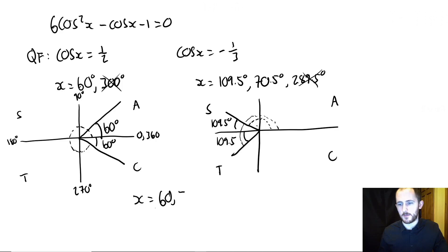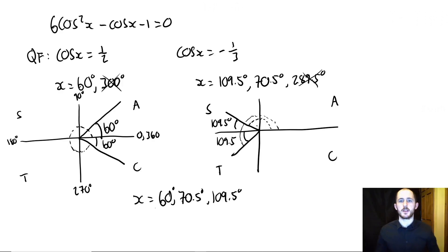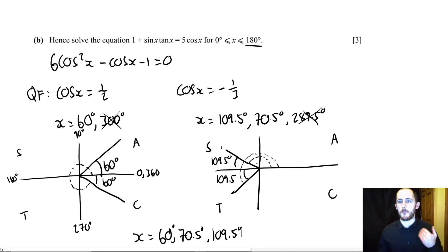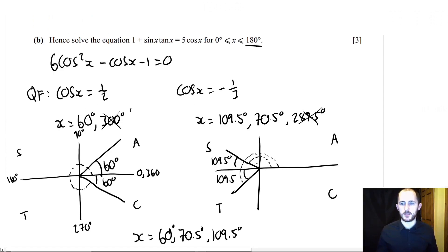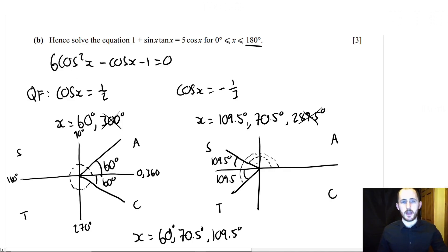I like to put them in size order, but it's not necessary. Since this question involves a quadratic, keep in mind you will get two sets of values and therefore need two CAST diagrams — or two graph readings if you use the graphs instead.